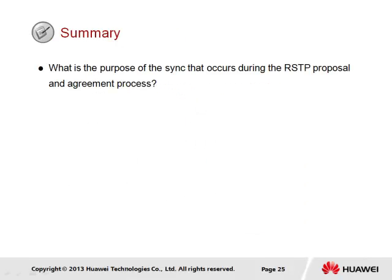In summary for this section, we have one question: what is the purpose of the sync that occurs during the RSTP proposal and agreement process? The purpose of the sync operation is to ensure that loops do not occur during the convergence that results from this process. It achieves this by blocking any ports participating in the spanning tree topology that are capable of forwarding BPDU, which relates to all designated ports pointing downstream. Once convergence is complete, the blocked ports will return to an active state.